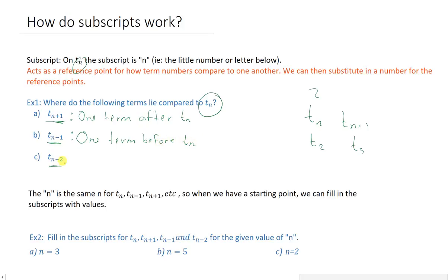And it doesn't just need to be one before or after, it can be as many as we like. For example, T_n-2 compared to T_n, it is two terms before T_n. So if I've got a list of all these terms, wherever T_n is, whichever term I choose to be T_n, that focal point, T_n-2 is two terms before it.